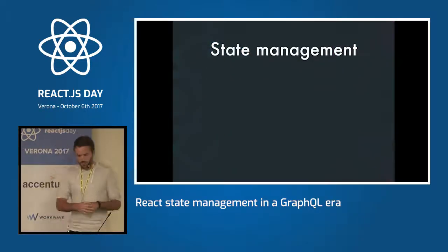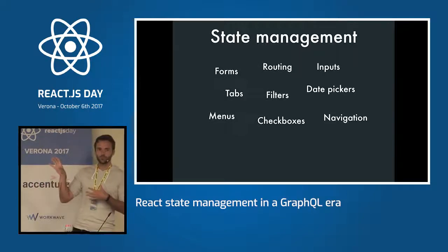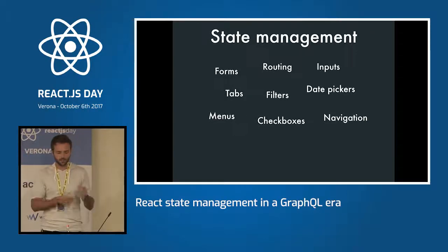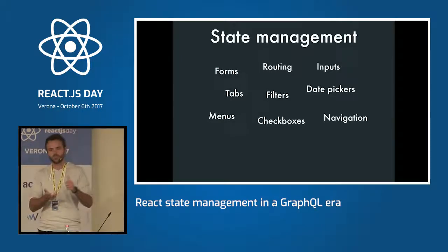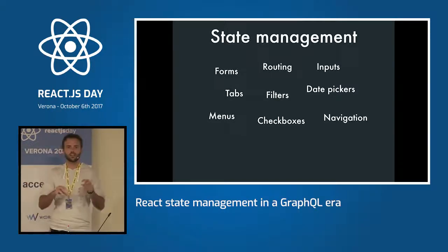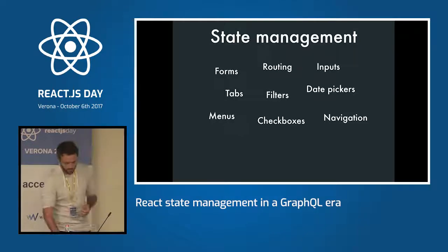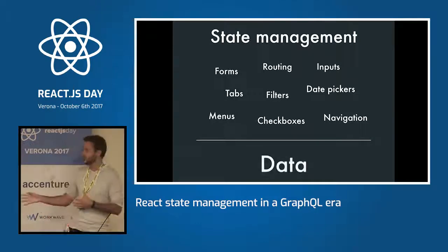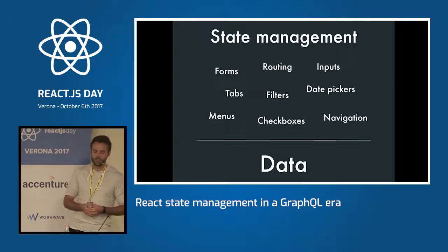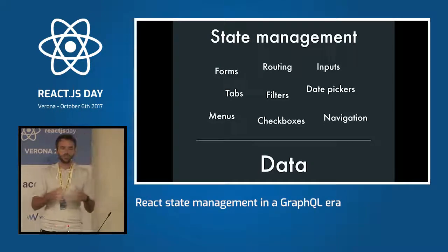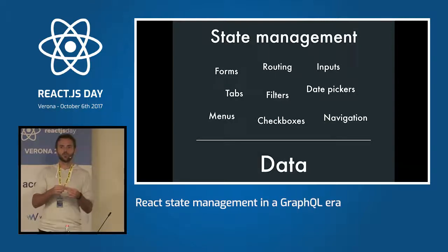These are all the bits and pieces we need for client state management — the small ones: forms, routing, inputs, tabs, filters, date pickers, menus, checkboxes, navigation, everything else. I call them the small parts. The big part that is complicating state management is data. Managing data in the client state of our app is pretty horrible, and it got horrible after we introduced single page apps.